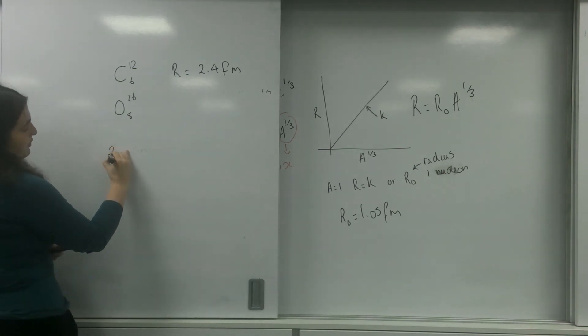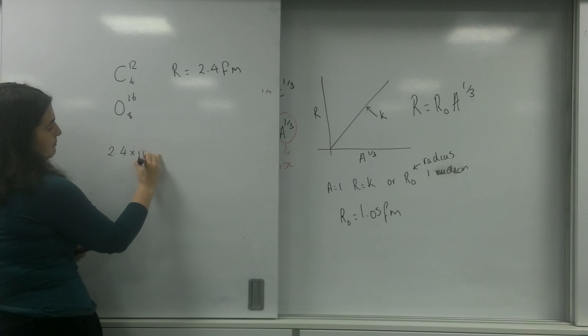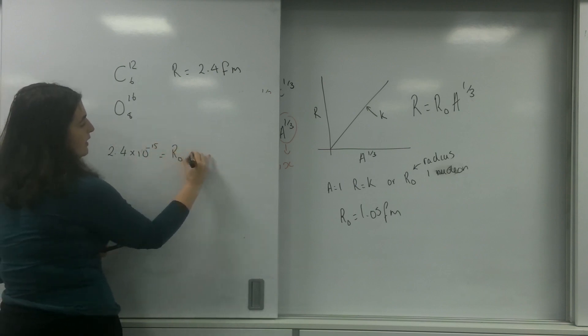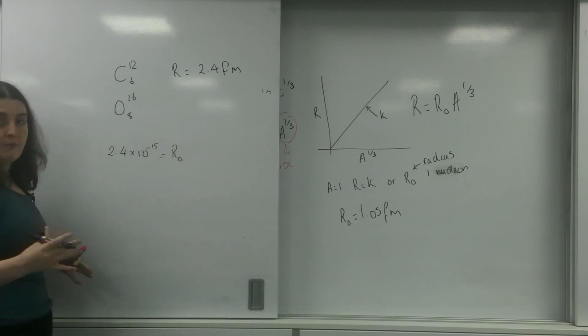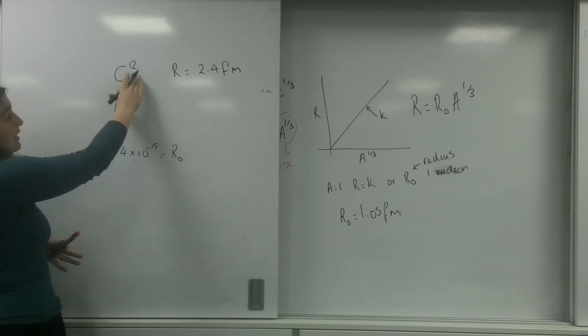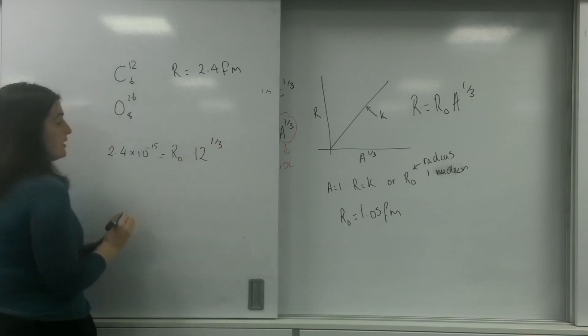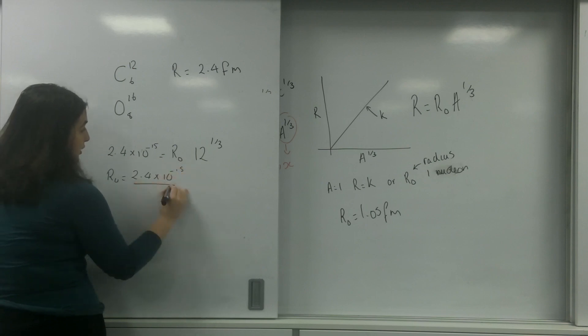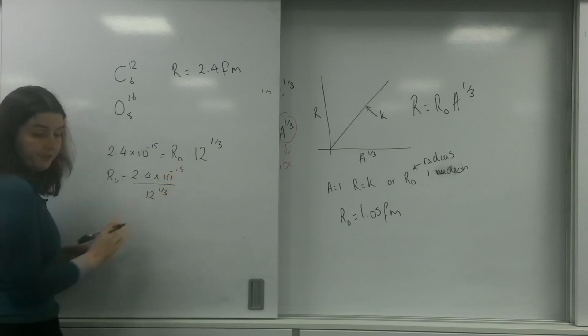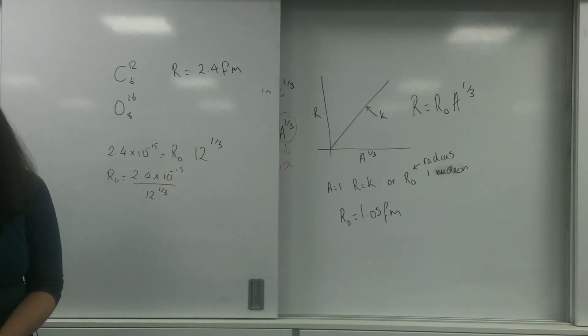So 2.4 times 10 to the minus 15 equals r naught times A. Now that's the atomic number, the amount of protons and neutrons I have. And in carbon-12, I have 12 to the power of a third. So r naught equals 2.4 times 10 to the minus 15 over 12 to the power of a third.